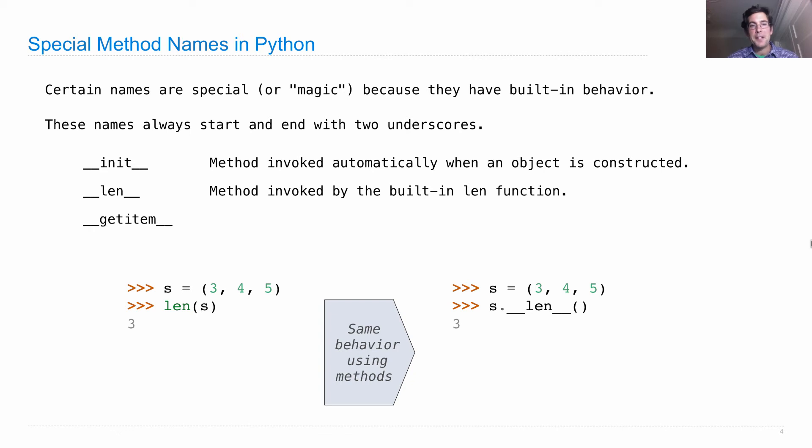What about another one, __getitem__? Well, that's the method that gets invoked for element selection. If I take some sequence and look up the element at a particular index, what I'm doing is I'm calling the special __getitem__ method. So I could equivalently say s element at index 2 is 5 or explicitly call this special method name, __getitem__, and that will also evaluate to 5.